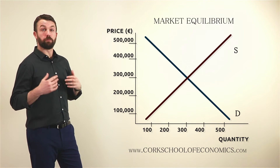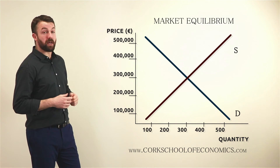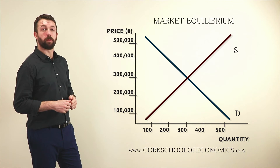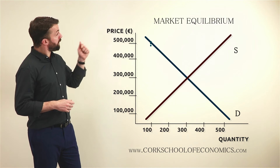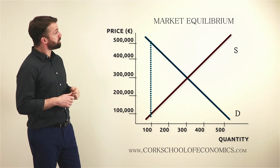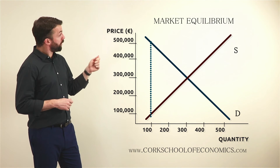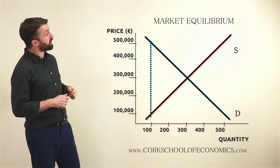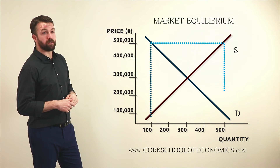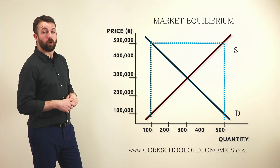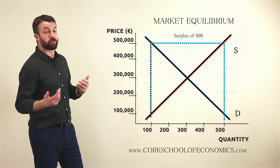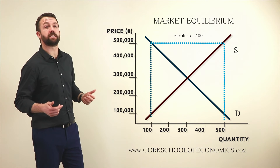So how do we illustrate that the price and quantity demanded and supplied will always come back to market equilibrium? Take a high price — take €500,000. At that price there will be 100 houses demanded. At that same price there will be 500 houses supplied. Therefore we have a surplus of 400 houses.